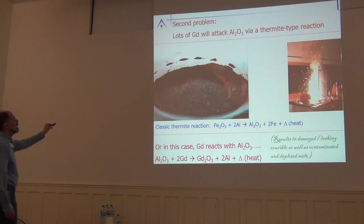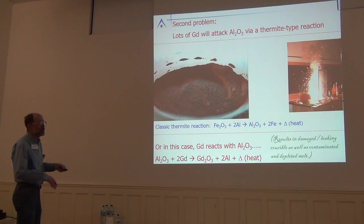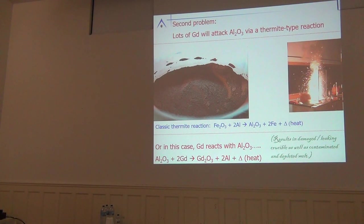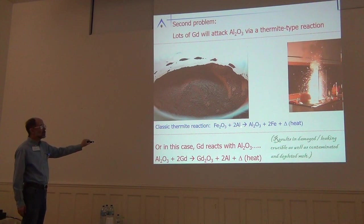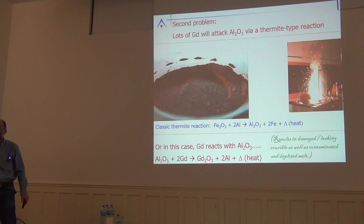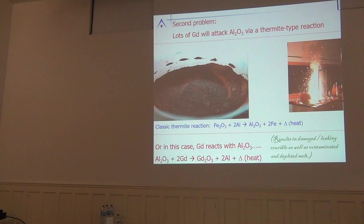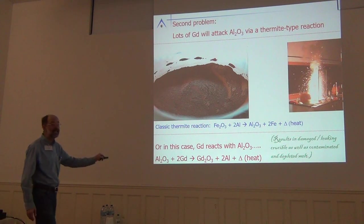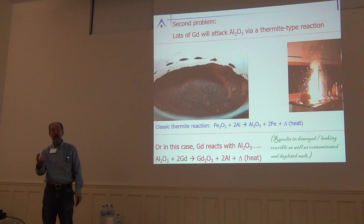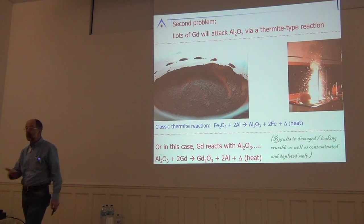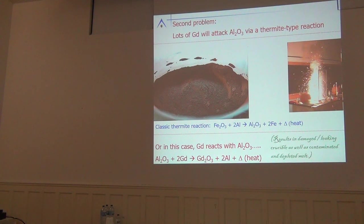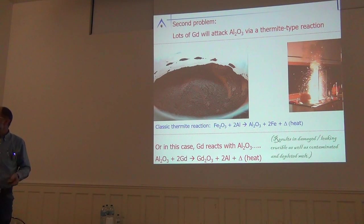When you turn the arc melter off, the material quenches to room temperature on the water-cooled copper hearth, giving you an intimately mixed iron-gadolinium ingot. But there's another problem: molten gadolinium will attack the alumina crucible via a thermite reaction. The classic thermite reaction is iron oxide plus aluminum powder — you ignite it and get molten iron and a huge energy release. It was the original anti-tank grenade and is still used for emergency welding in naval ships.